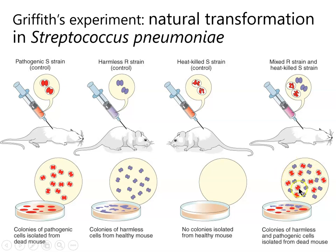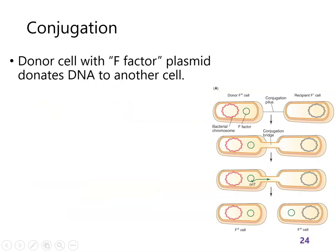When he plated the bacteria, some smooth strain bacteria had appeared. He verified there wasn't contamination — he didn't inject any live smooth bacteria, but there were some. What happened? Well, these dead cells had DNA encoding the ability to make that glycocalyx. When they're dead, they rupture and release their DNA. Some of the rough cells picked up that DNA and recombined it into their genome, so now they have the ability to make a capsule and they are smooth strains. That's transformation, and it's a big deal in genetic engineering.